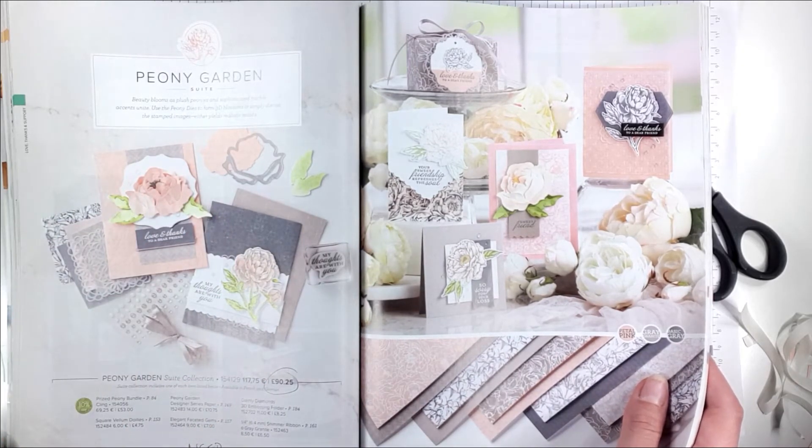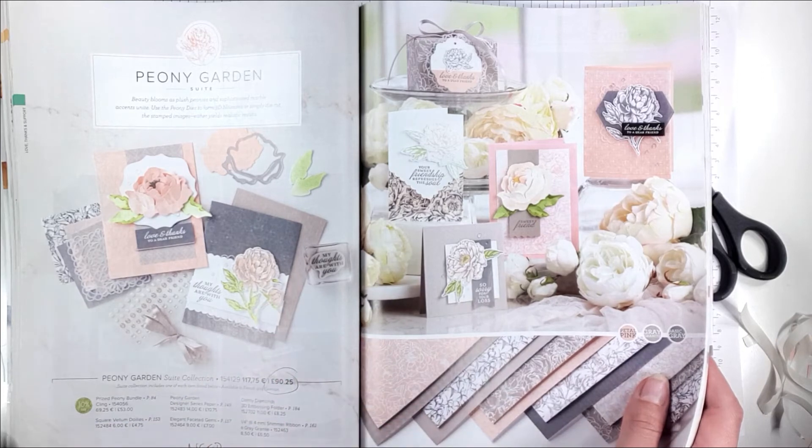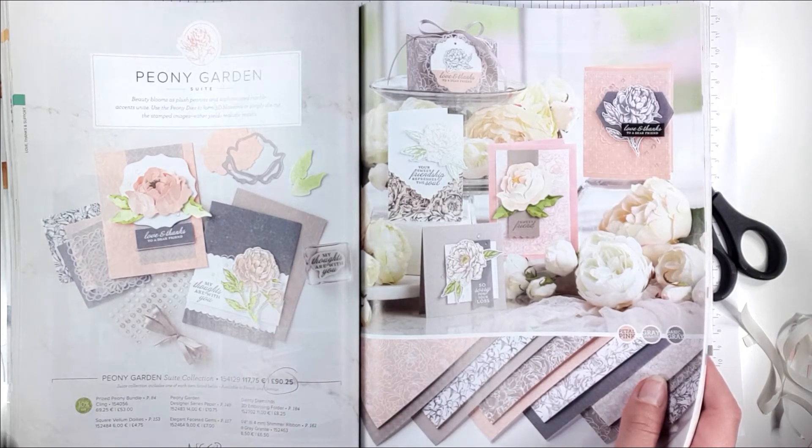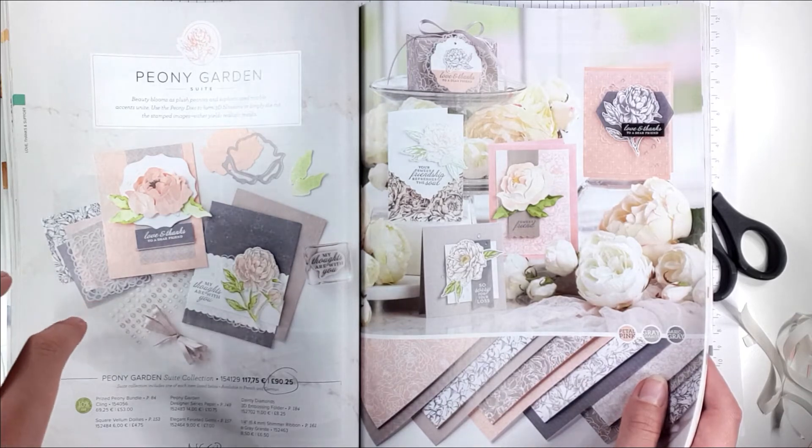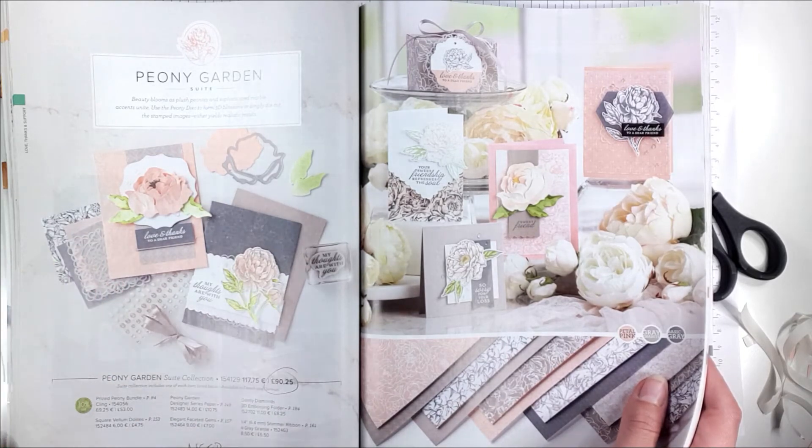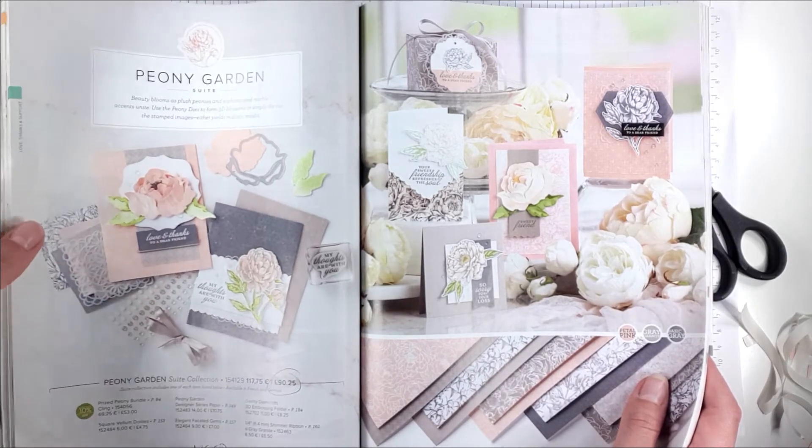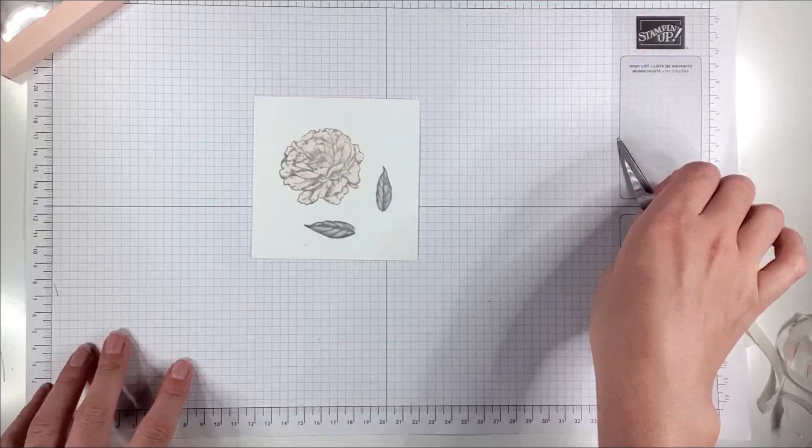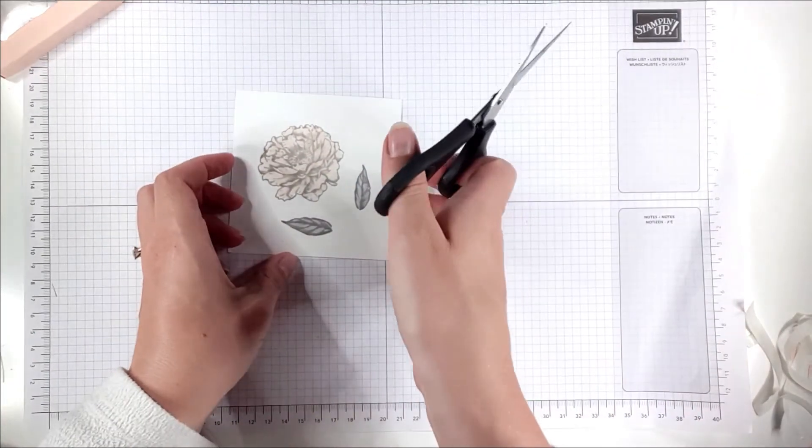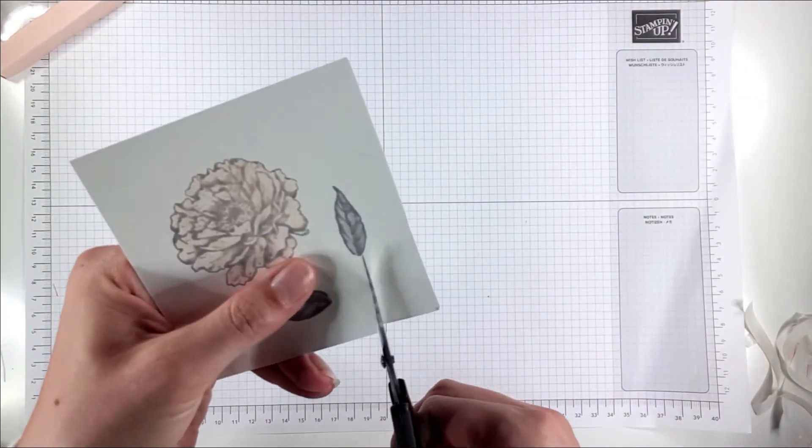I'm going to link below to the stamp set individually in case you just want to buy the stamp set, but I'm also going to link to the bundle even though we're not going to use the dies on this particular project. Like I say, I don't want the white edge so I'm just going to fussy cut around images.